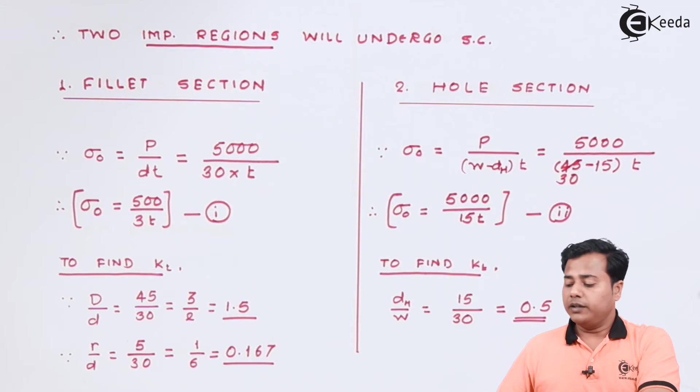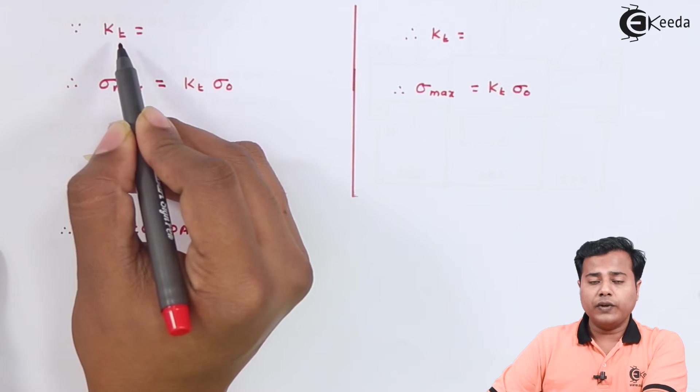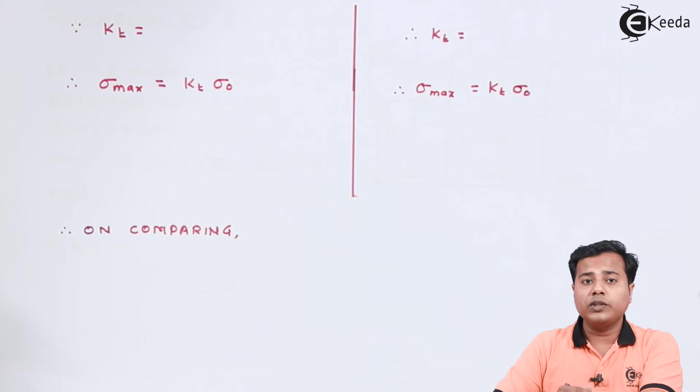Let's move ahead now for the fillet section. In order to find out kt let us refer to the chart which is available for stress concentration factor in design data book where for the value D by small d and r by small d are found out. So based on that particular chart the value of kt obtained is somewhere around 1.8.